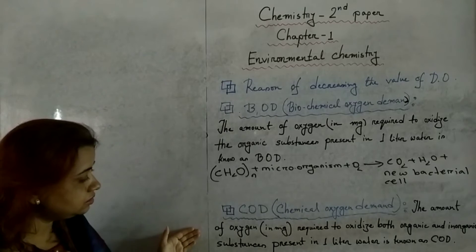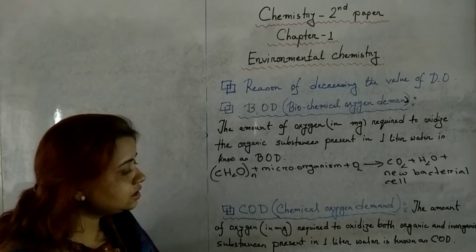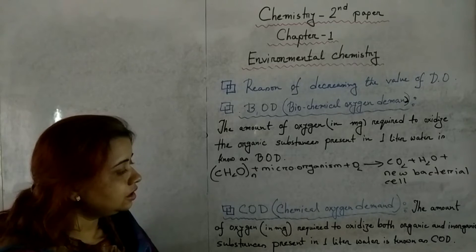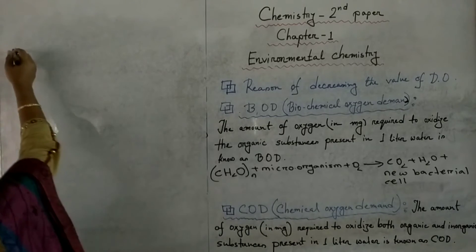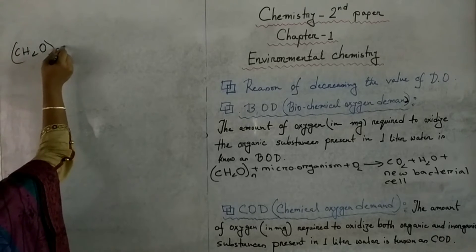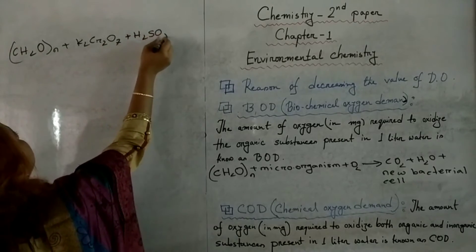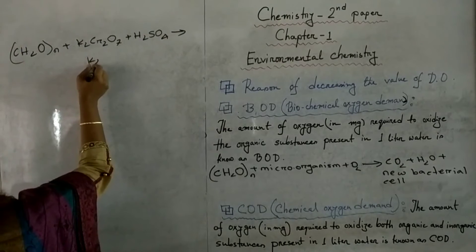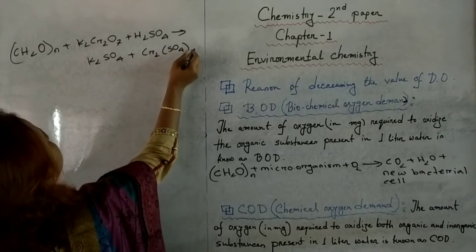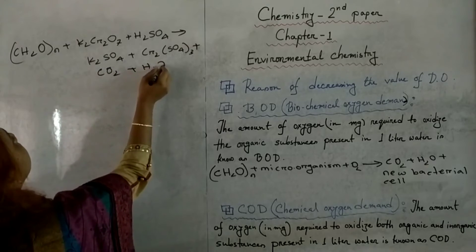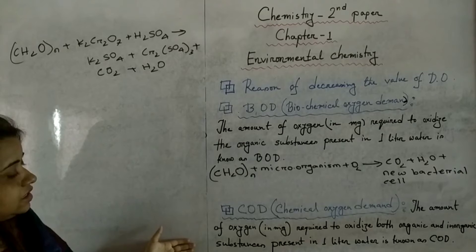Now come to COD. The amount of oxygen in milligrams required to oxidize both organic and inorganic substances present in 1 liter of water is known as COD. COD is done by acidic potassium dichromate: organic substances plus potassium dichromate plus sulphuric acid gives potassium sulphate plus chromium sulphate plus carbon dioxide plus water.